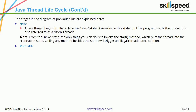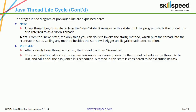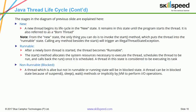The next state is Runnable. After a newly born thread is started, the thread becomes runnable. The start() method allocates the system resources necessary to execute the thread, schedules the thread to be run, and calls back the run() method once it is scheduled. A thread in this state is considered to be executing its task. The next state is Non-Runnable or Blocked: a thread which is alive but not in runnable or running state will be in a blocked state due to suspend(), sleep(), wait() methods or implicitly by the JVM to perform I/O operations.